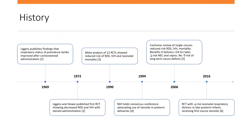This started in 1969 when a basic science researcher named Dr. Liggins administered dexamethasone to fetal sheep. He found that fetal sheep that got dexamethasone and were born very premature — early enough that he didn't even expect visible lung tissue — were able to see lung tissue and breathe. Then he teamed up with Dr. Howie in 1972 and published the first randomized control trial in human patients who received antenatal corticosteroids. That trial showed decreased respiratory distress syndrome and decreased rates of intraventricular hemorrhage for babies of patients who got antenatal corticosteroids.